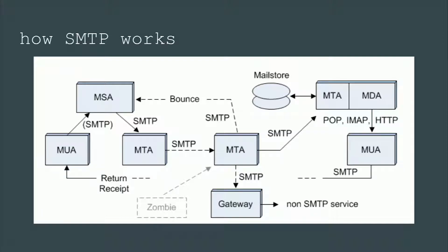If there is an error along the way, any MTA in the middle should either accept responsibility for that message or reject it with an error. This is actually the power of the SMTP protocol. Every hop in the system will either assume responsibility and attempt to convey the message to the next hop, or it will respond with an error and deliver that error back to the original user. SMTP either guarantees that the message will be delivered, or you will receive an error that it has not been delivered. This makes it a very robust protocol. It will keep trying to deliver the message until a timeout occurs.